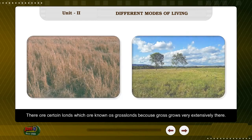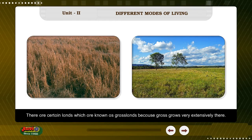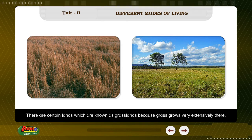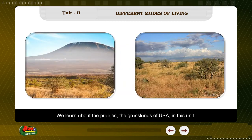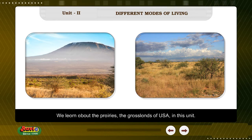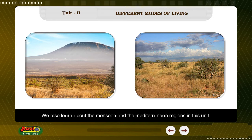There are certain lands which are known as grasslands because grass grows very extensively there. We learn about the prairies, the grasslands of USA, in this unit. We also learn about the mountaineer and the Mediterranean regions in this unit.